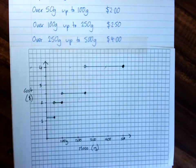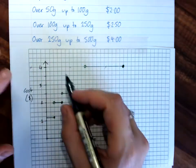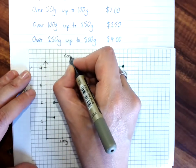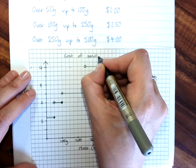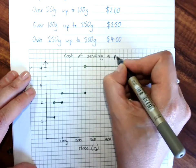That is a step graph, and of course, since it has a meaning, I'd give it a title, cost of sending a parcel.